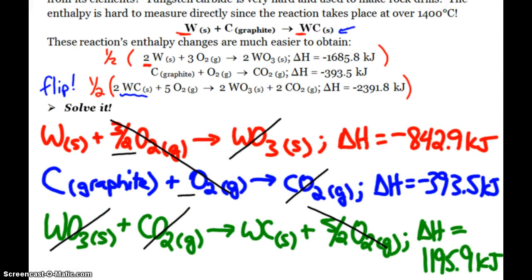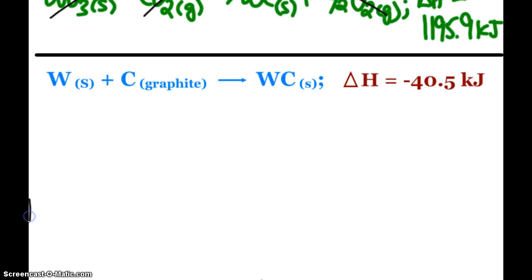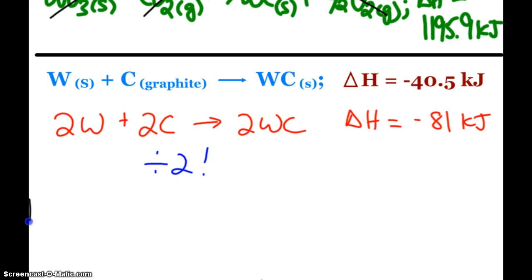I also could have done it slightly differently. I could have still flipped this reaction, but then doubled this reaction. And when I do that, down here, I end up with 2W plus 2Cs, making 2WCs with a delta H equal to negative 81 kilojoules. And so you would just have to recognize that I would have to divide everything by 2, and that's how I end up with that delta H in that reaction.